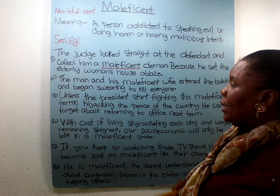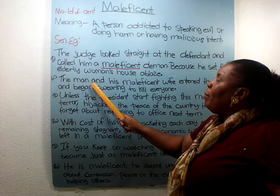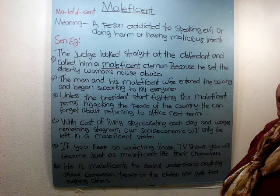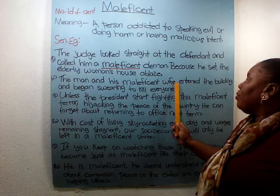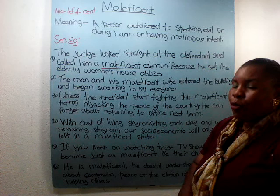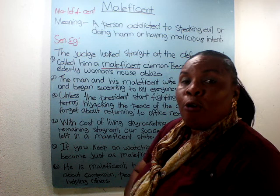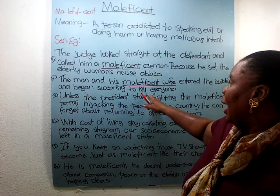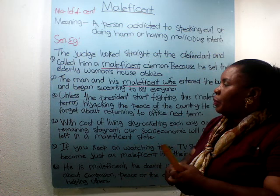Number two: 'The man and his maleficent wife entered the building and began swearing to kill everyone.' So both he and his wife have wicked, malicious intentions — swearing to kill people. That's our next sentence example.